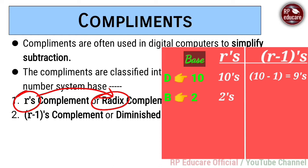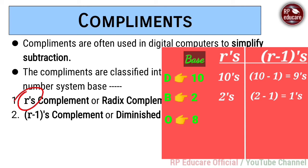For binary, r-1 = 2-1 = 1, so binary r-1's complement is 1's complement. Similarly, for octal, the base is 8, so r's complement is 8's complement. For octal r-1's complement: 8-1 = 7, so octal r-1's complement is 7's complement.